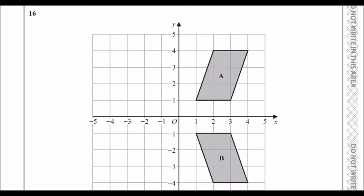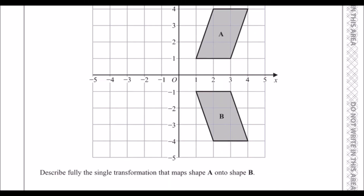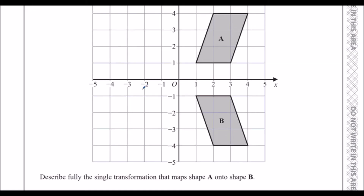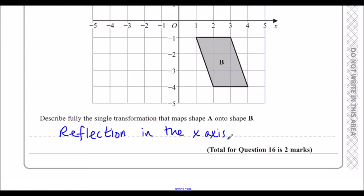Question 16: We have two shapes A and B and need to describe the transformation to get A onto B. It's a reflection in the x-axis.